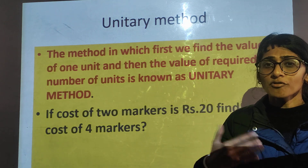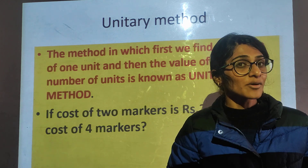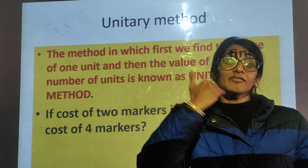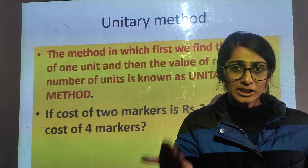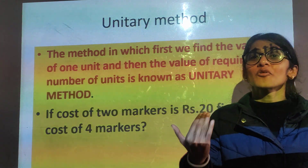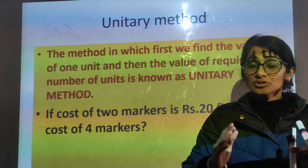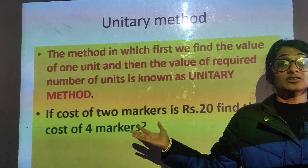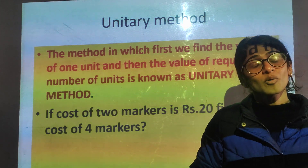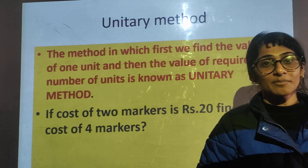Now how can you find the cost of 4 markers? If cost of 1 marker is Rs. 10, then cost of 4 markers will be 4 multiplied by 10, that is Rs. 40. When you know the value of less and you want to find the value of more, you do multiplication. By using this method you can solve many important types of word problems. I hope you all liked this method and have understood unitary method.